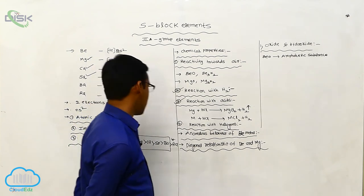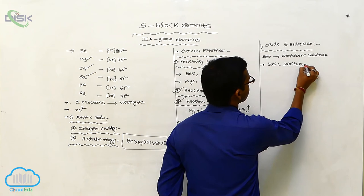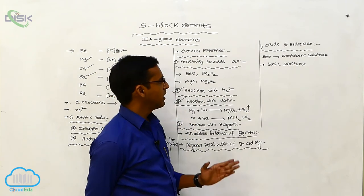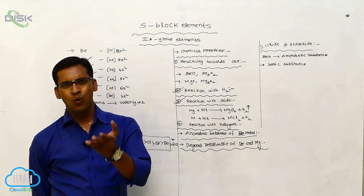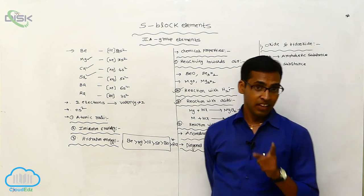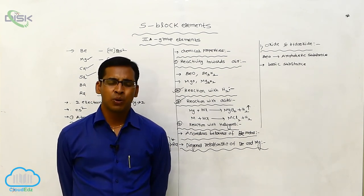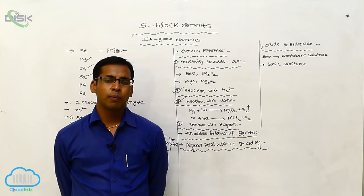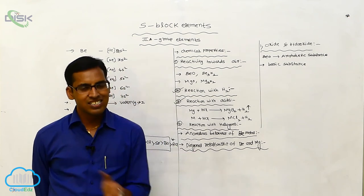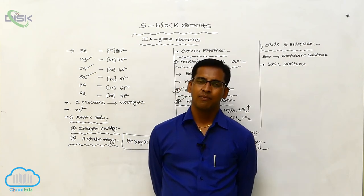The remaining oxides — magnesium oxide, calcium oxide, strontium oxide, and barium oxide — show basic character. This is a major difference from beryllium oxide, which shows amphoteric character due to its covalent nature. The remaining oxides are easily soluble in water. When these oxides dissolve in water, they produce hydroxides. Generally, Group 2A elements are less reactive than Group 1A elements.